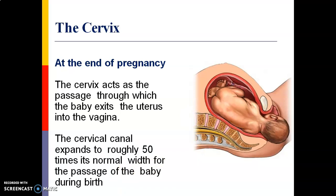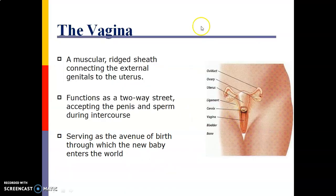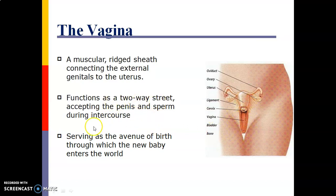Next is the vagina — a muscular, elastic sheath connecting the external genitals to the uterus. It functions as a two-way structure: accepting the penis and sperm during intercourse, and serving as the birth canal through which the new baby enters the world.